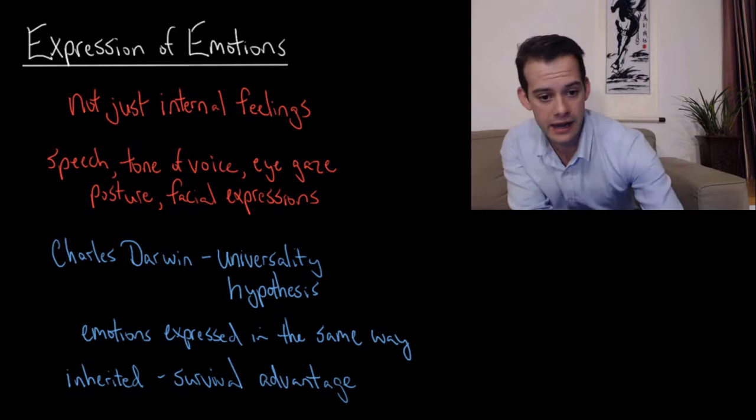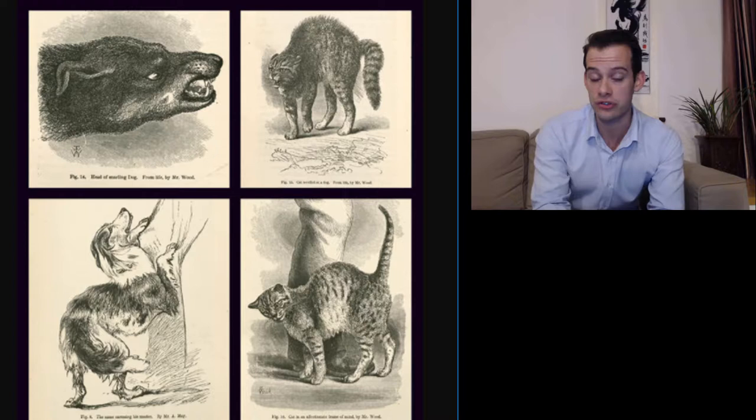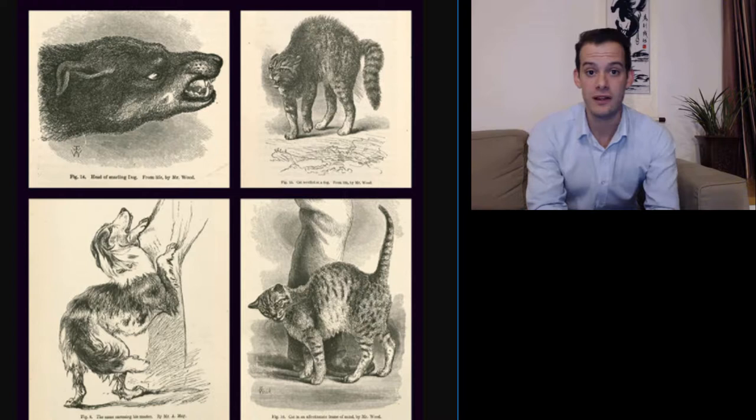And Darwin thought we could also see this in animals, that we could recognize the emotional states of animals just by observing their expressions.